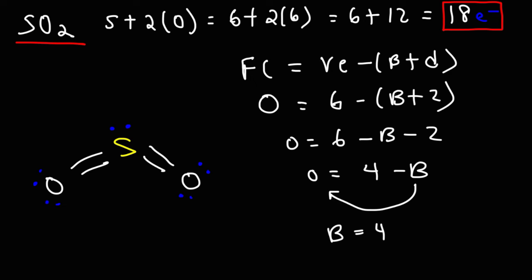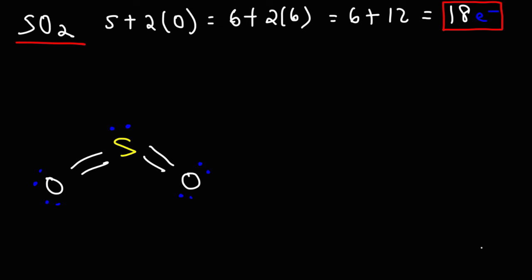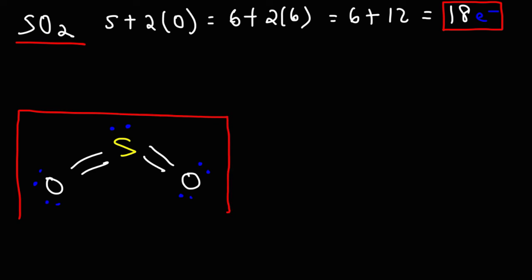Now, just to make sure that we're on the right track, let's add up the electrons. This is 2, 4, 6, 8, 10, 12, 14, 16, 18. So that's good. Remember, every bond counts as 2 electrons. So this is the Lewis structure of sulfur dioxide. That's how you can draw it.